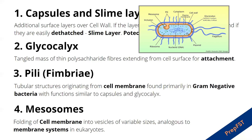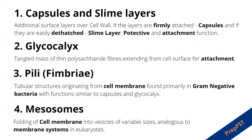Next is pili or fimbriae — tubular structures that originate from the cell membrane, important to remember. Pili are only present in gram-negative bacteria. Next are mesosomes. Prokaryotic cells lack the specialized membrane system found in eukaryotes, so they form recesses by folding of the cell membrane in variable sizes, and whatever is formed is very much similar to the membrane system in eukaryotes.